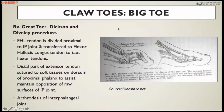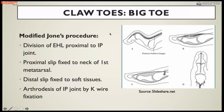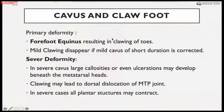For the big toe, the Dixon and Diveley procedure divides the extensor hallucis tendon proximally and reattaches it to the neck of the first metatarsal and flexor hallucis longus to compensate. The modified Jones procedure is also commonly used for the big toe: the extensor hallucis longus tendon is released and fixed to the first metatarsal, and the residual portion is reattached to the interphalangeal joint capsule; arthrodesis of the interphalangeal joint is sometimes added. This compensates for claw deformity of the big toe and all lateral toes.